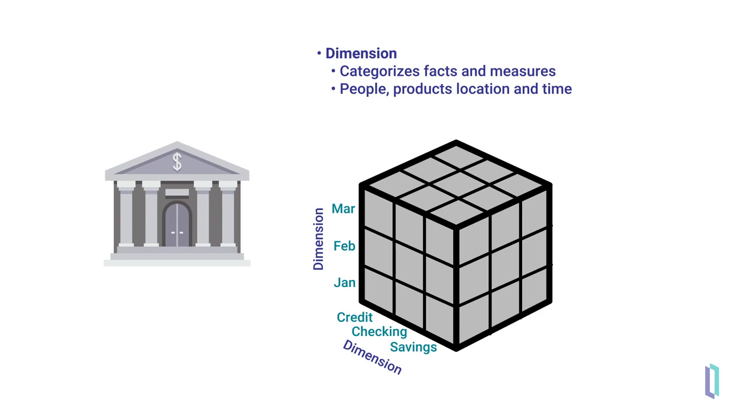Many dimensions contain a hierarchy or levels of attributes that support drilling up and down. For example, a dimension of account open date could include a hierarchy of year, quarter, month, and days, allowing users to easily identify patterns.